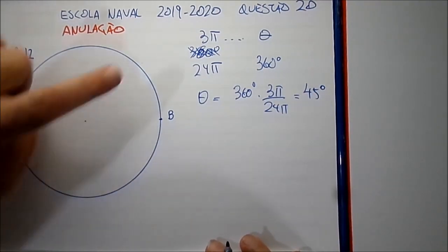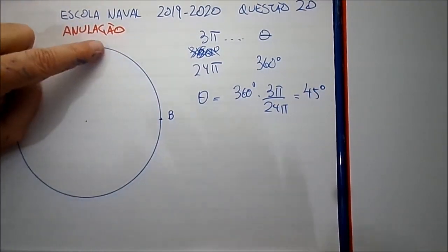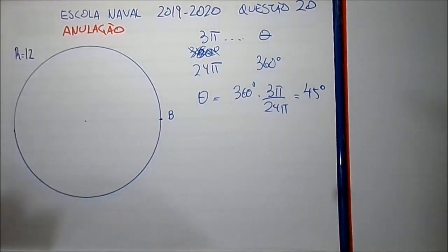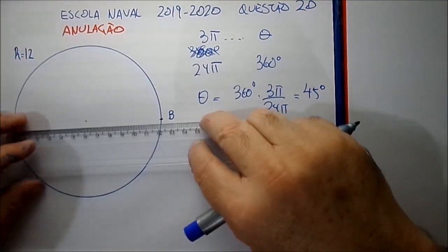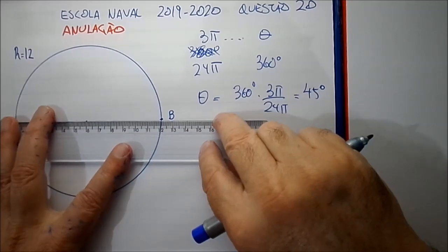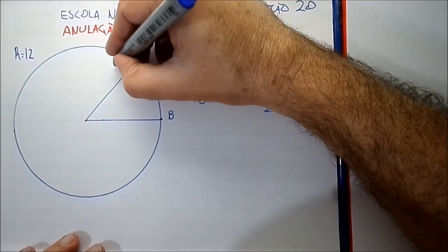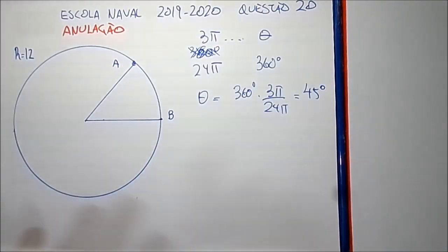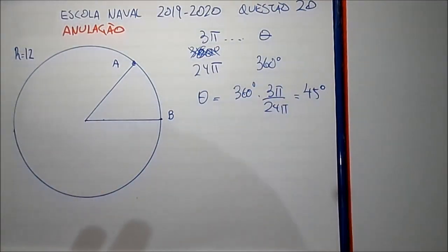Esse arco AB subentende um ângulo central de 45 graus. Vamos colocar aqui 45 graus. Na verdade, a figura está assim.